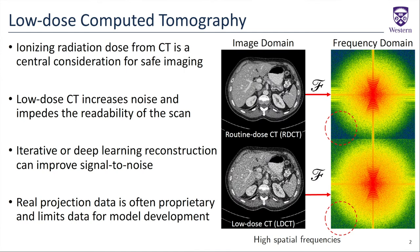In X-ray CT, we always want to remain conscientious of the radiation dose we give to patients during diagnostic exams. Low-dose protocols are therefore desirable but suffer from poor signal-to-noise, which can be corrected by iterative or deep learning reconstruction techniques. Using the raw X-ray projection data is useful, but these sinograms are often vendor-proprietary, which limits the amount of high-quality data available for developing these advanced reconstruction approaches.